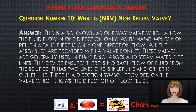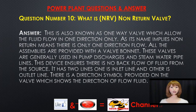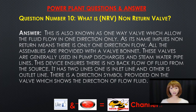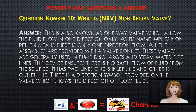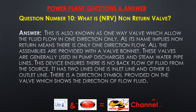Question number ten: what is a non-return valve (NRV)? This is also known as a one-way valve, which allows fluid flow in one direction only. All assemblies are provided with a valve bonnet. These valves are generally used in pump discharges and steam-water pipelines to ensure there is no back flow of fluid from the source. It has two lines — one inlet and one outlet — and a direction symbol on the valve shows the direction of fluid flow.